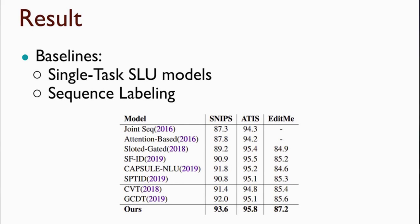We compare our model with two categories of baselines. The first category is models proposed for spoken language understanding, including joint models that simultaneously predict semantic slots and intent. Since our model does not use intent labels, we compare against versions of these baselines that use only semantic slot labels. The second category is state-of-the-art models for named entity recognition. Our model achieves the highest performance on all three datasets, indicating the effectiveness of the proposed approach compared to strong baselines.